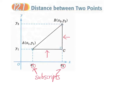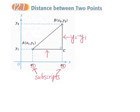y1 is the y coordinate of point A and y2 is the y coordinate of point B. We can think of the y coordinates as the height of the point above the x axis, so the height of point A is y1 and the height of point B is y2 above the x axis. Therefore the length of BC will be y2 minus y1.